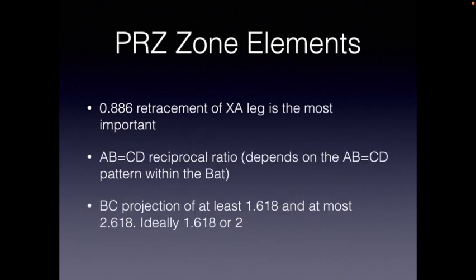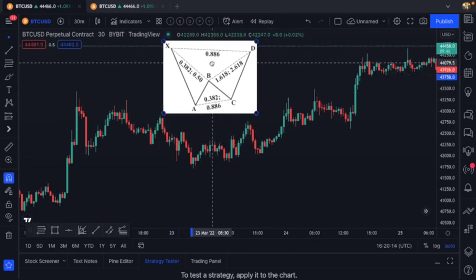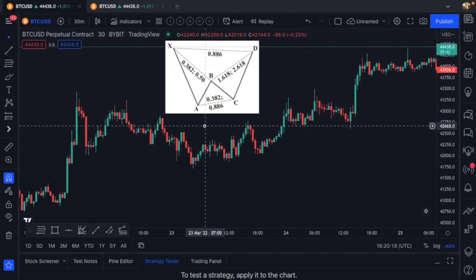Now comes the PRZ zone slide. A lot of people do not use this as they should, because this is a very important part of harmonics. In my mind, it gives us multi-levels of confirmation — or confluence — and it gives us a range in which we can really analyze the price action to make a very well-informed decision. Let's head over to the chart. Here we are, and I have transposed this image of a bearish bat just to help us visualize this a little better.